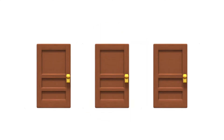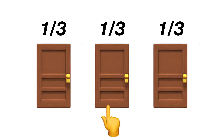Allow me to explain how the answer came about. First, we have three doors. The chance of picking a door with a car behind it is 1 in 3, and a goat is 2 in 3, since there are two goats, and one-third plus one-third is two-thirds.